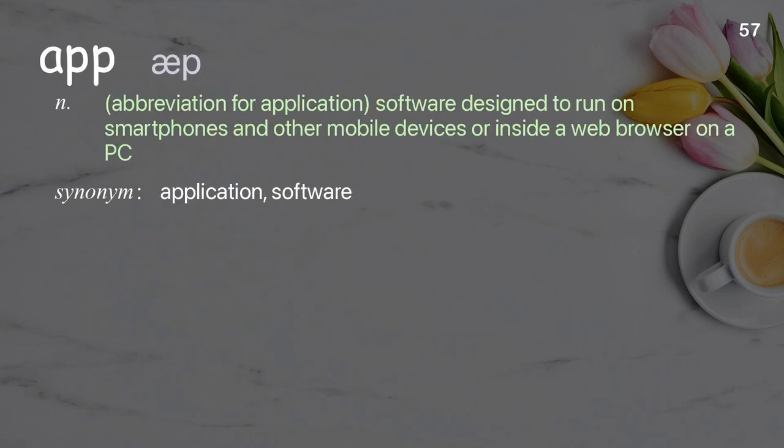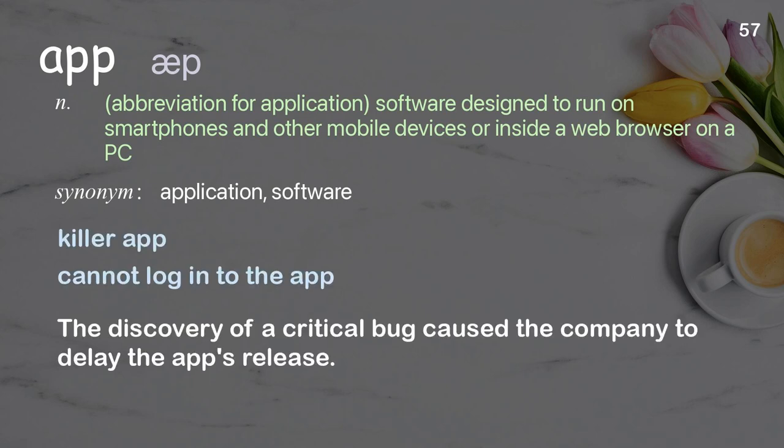App: abbreviation for application; software designed to run on smartphones and other mobile devices or inside a web browser on a PC. Examples: killer app, cannot log into the app. The discovery of a critical bug caused the company to delay the app's release.